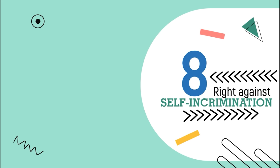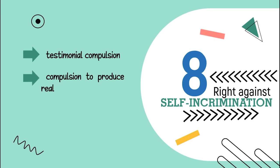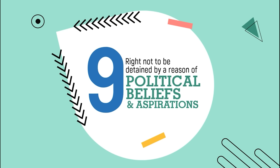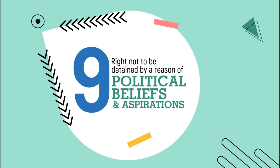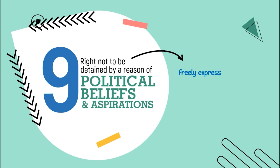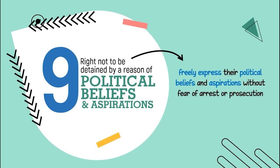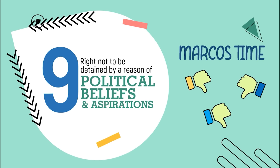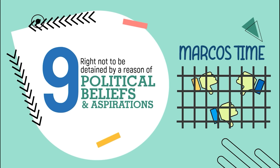Number nine, the right not to be detained by reason of political beliefs and aspirations. This right guarantees the people to freely express their political beliefs and aspirations without fear of arrest or prosecution, which was denied during the time of President Marcos. Thousands of people who criticized the government, particularly political opponents, were arrested and known as political prisoners. The new constitution made sure not to repeat that history, so this right was included.